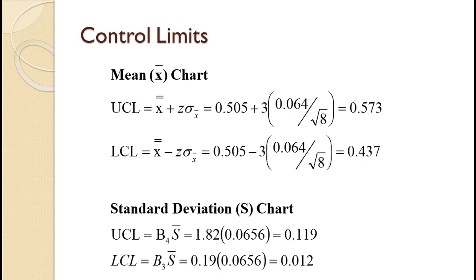For the X-bar chart, the centerline is just the average of the 10 means, or 0.505. This is called the grand mean. To find the upper control limit, we take the grand mean of 0.505 and add 3 times the standard deviation of 0.064 divided by the square root of the sample size to get 0.573. We subtract the same value to get the lower control limit of 0.437. Note that you should always use a Z value of 3 unless the problem states otherwise.